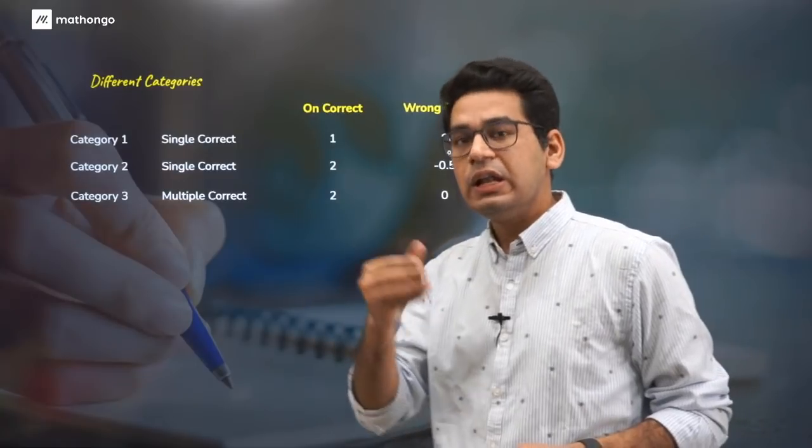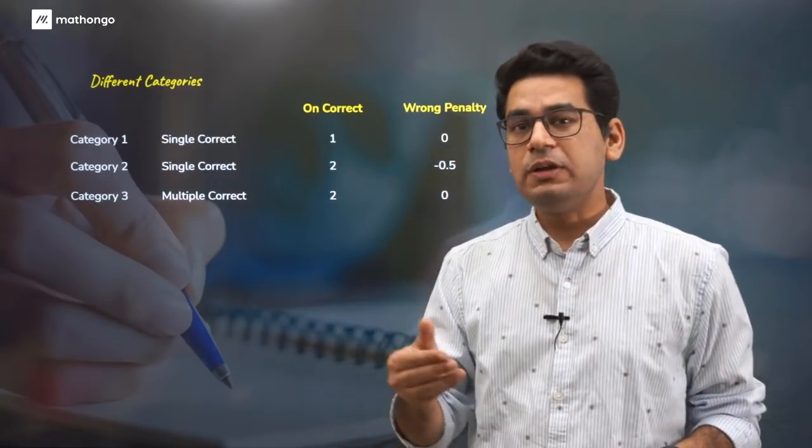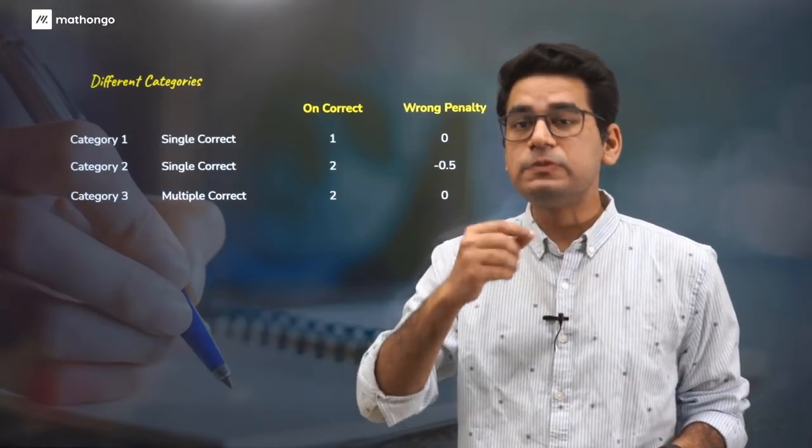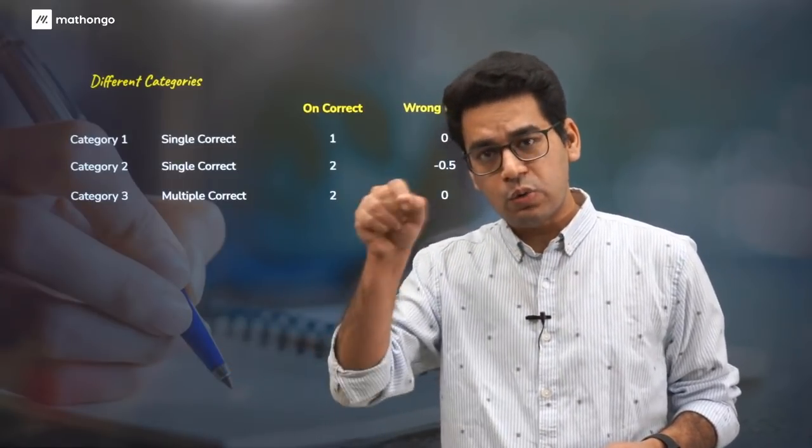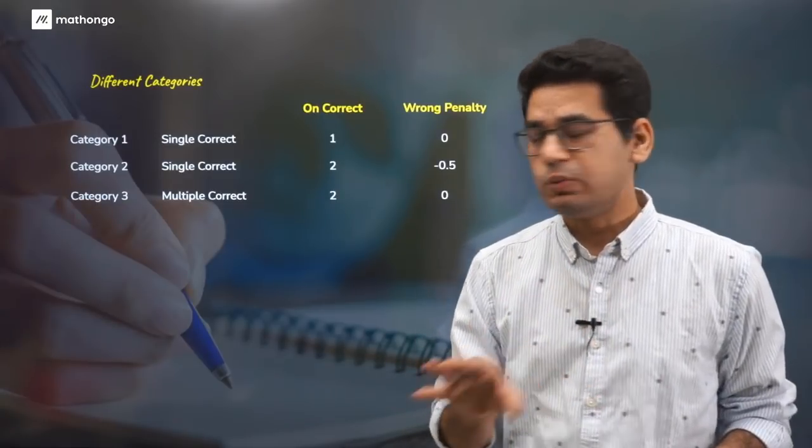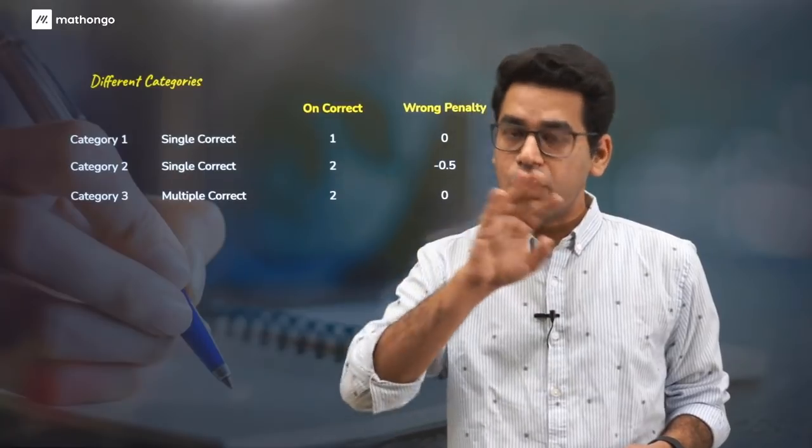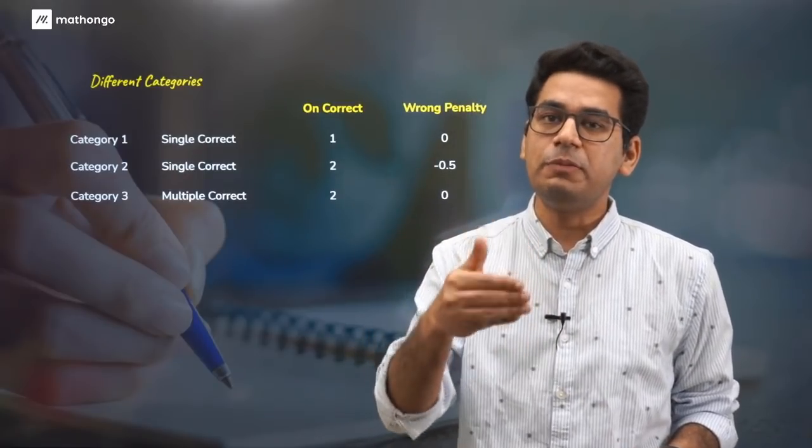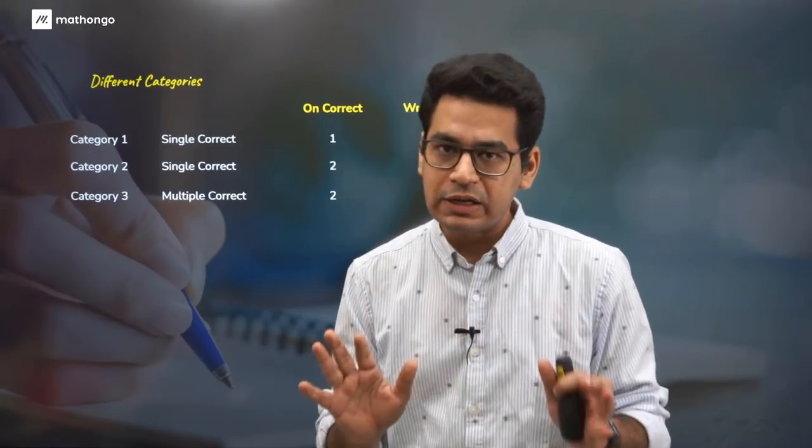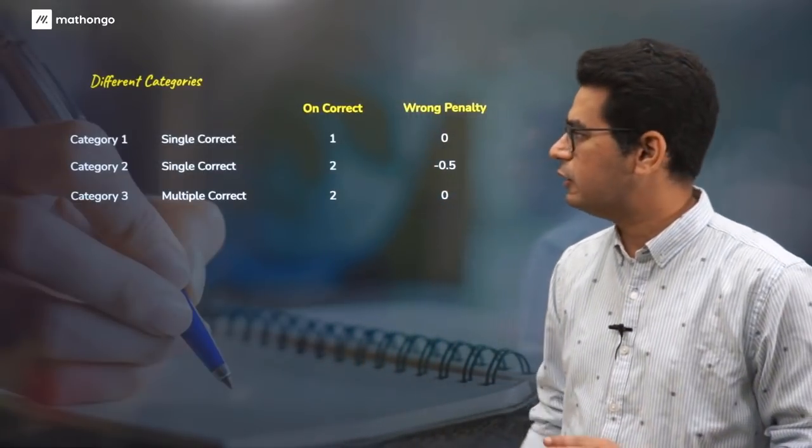Category 1 and Category 2 will have problems with only one option correct. Category 1 will fetch you one mark with no penalty. Category 2, single correct only, will fetch you two marks with a penalty of minus 0.5. Category 3 is multiple correct which will fetch you two marks with no penalty as such, but there is partial marking.